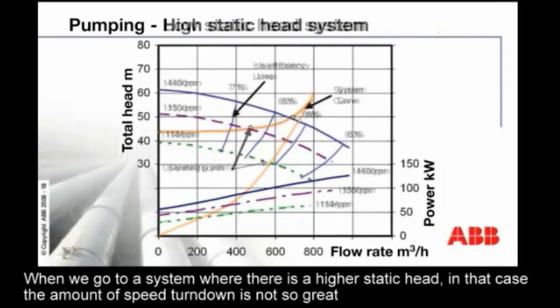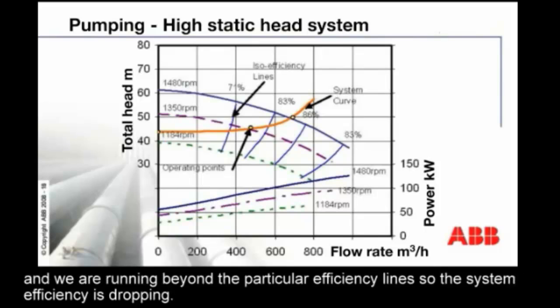When we go to a system where there's a higher static head, in that case the amount of speed turndown is not so great. We're running beyond the particular efficiency lines, so the system efficiency is dropping.